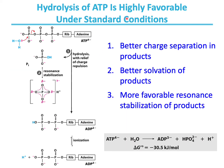Hydrolysis of ATP is highly favorable under standard conditions because of three reasons. First, there is better charge separation in products — phosphate or ADP each have much better charge separation. Second, there is better solvation of products; phosphate or ADP are better solvated as compared to ATP.